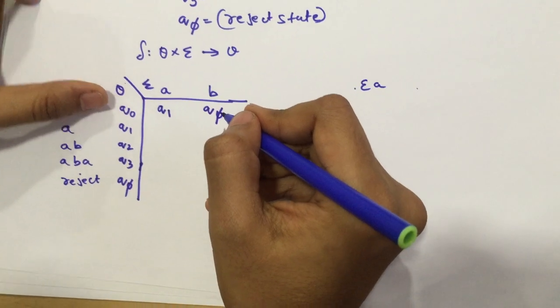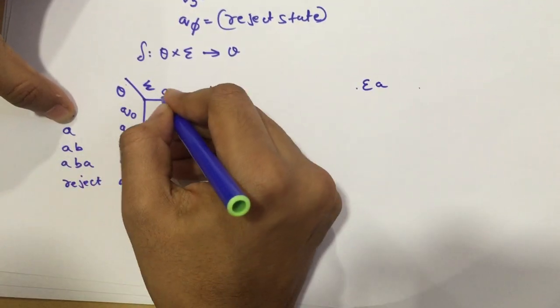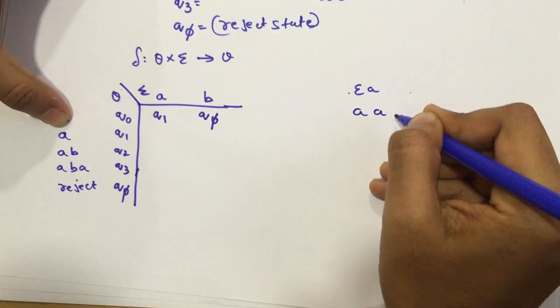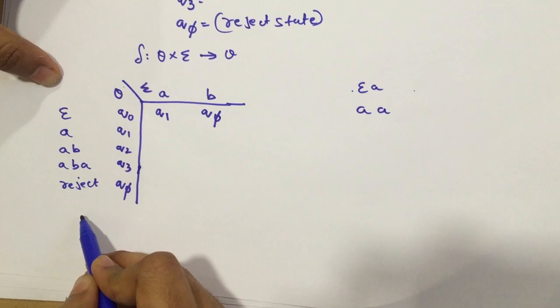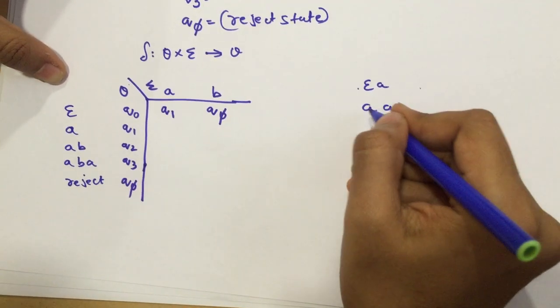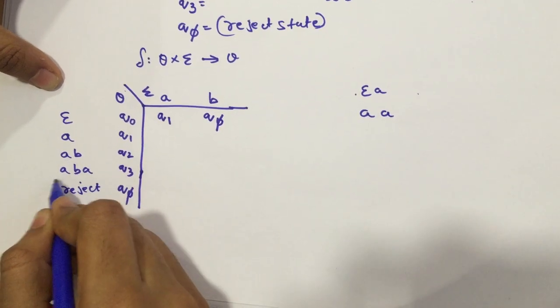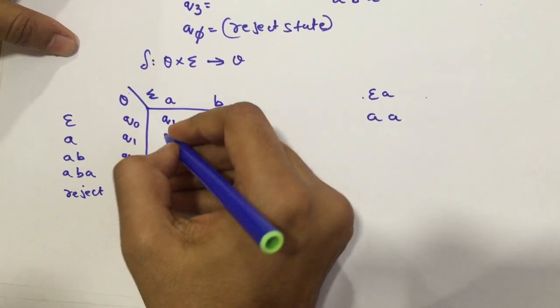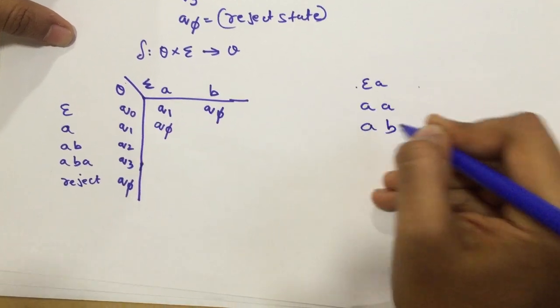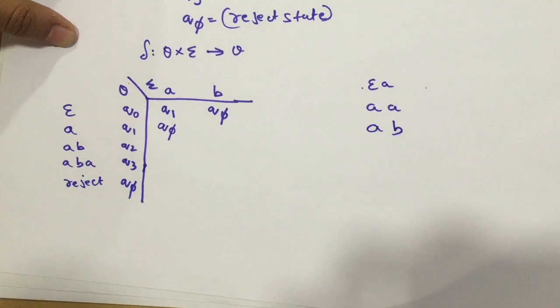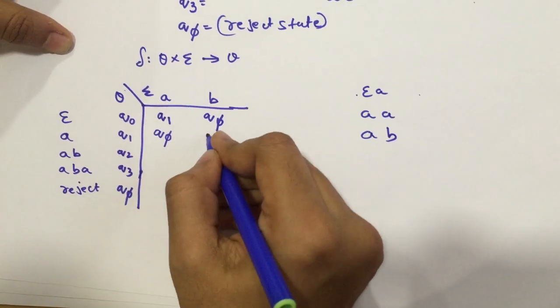Now, we take the next state which is Q1 with A. When Q1 goes with A, I get AA. Can I find anywhere here AA? No. So, does it start with ABA? Does it start with A? Does it start with AB? Does it start with ABA? No. So, I directly reject it. Now, I'm going to take AB. Do I have a state where it starts with AB? Yes. So, I'm going to put it into Q2.